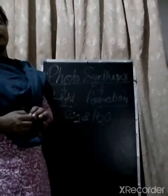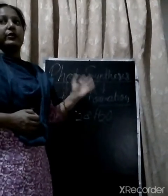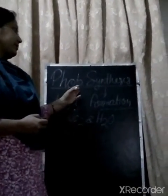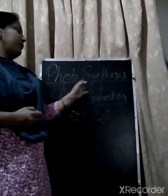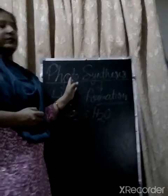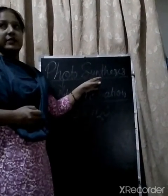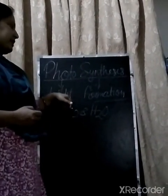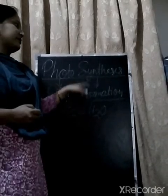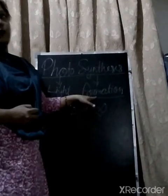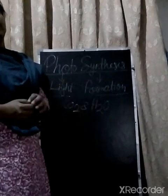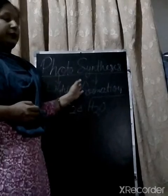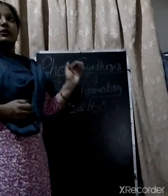In earlier classes you read about photosynthesis. It is made up of two words: first is 'photo' and second is 'synthesis'. Photo means light and synthesis means formation.